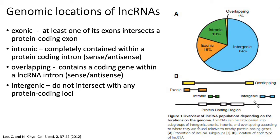LncRNAs can be found all over the genome. The majority are located in intergenic regions — intergenic with respect to protein-coding genes. However, a significantly large portion can be found within exons and introns of protein-coding genes, and even more surprisingly, they can be found in both the sense and antisense direction within those introns and exons. This basically debunks the classic view that introns don't perform much function.